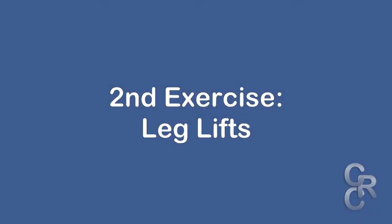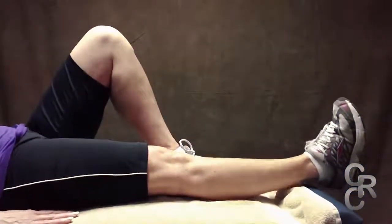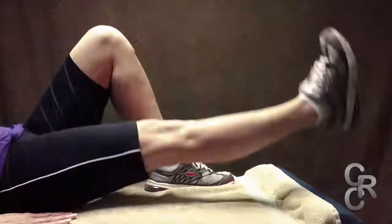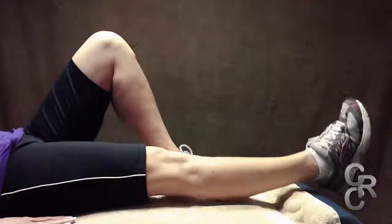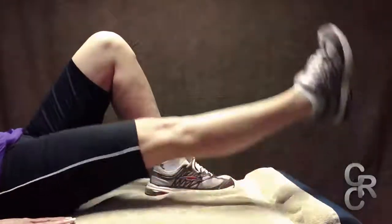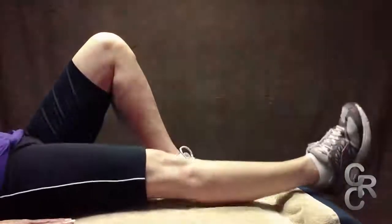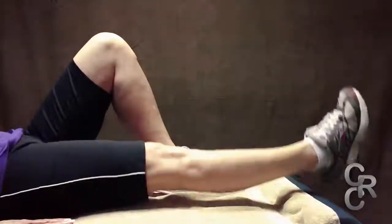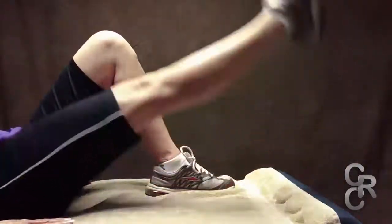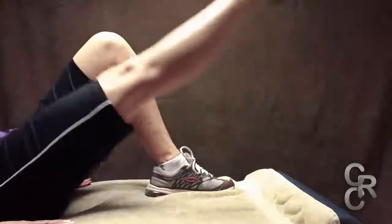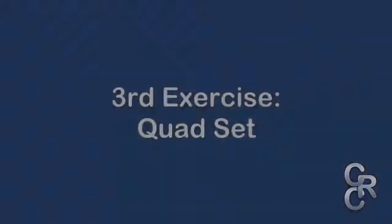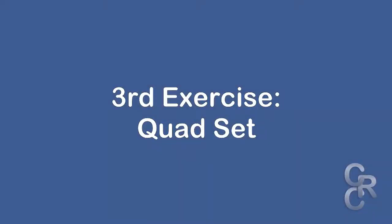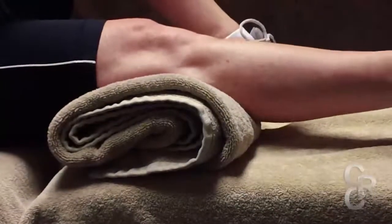Laying on your back with the non-exercising knee bent and your foot flat on the floor, keep the other knee locked and lift the leg off the floor to approximately 45 degrees. Lower the leg to just touching the floor but not to a resting position. Repeat — start with 10 repetitions, up to 20 reps within two weeks. This strengthens the anterior thigh, lower abdomen, and buttock muscles.